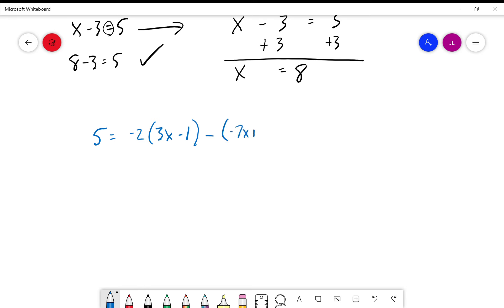Negative seven x plus eleven. Now we've got a lot of things going on here, but really this isn't that bad if we just remember our order of operations. We can get through this quite easily. Five is equal to, we're going to distribute our negative two throughout because we can't combine these terms, they're not like. So negative two times three x is negative six x, negative two times negative one is plus two.